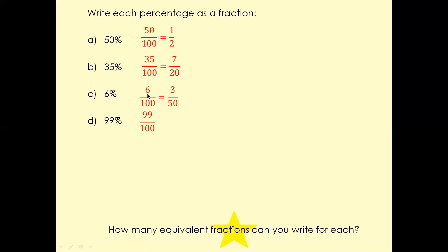6% means 6 parts per 100. Again, simplify that and you'll get 3/50. And 99% means 99 parts per 100, and you cannot simplify this number any more. So that is going to be the final answer for this question.